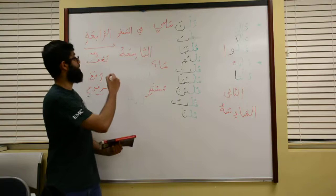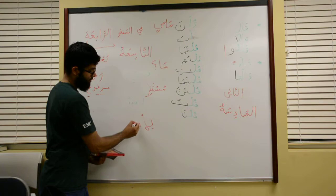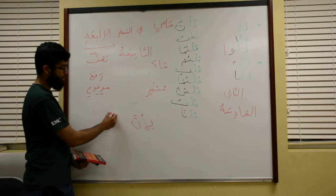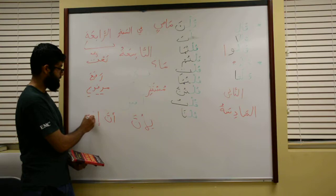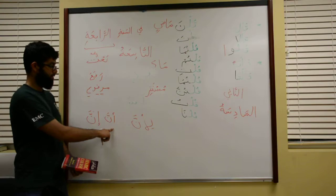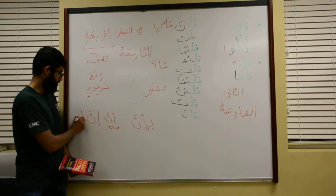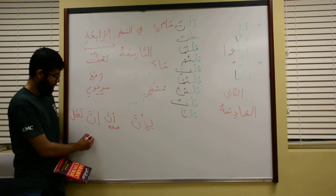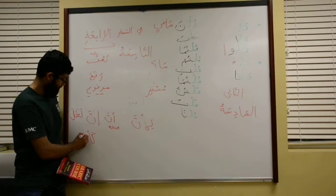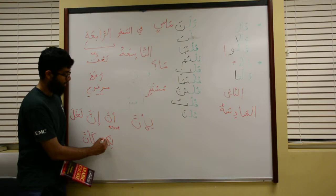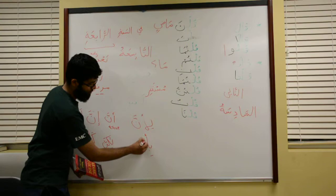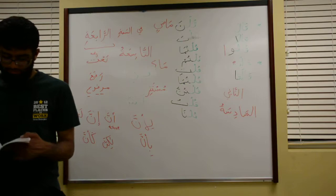Number four: li anna means because. Li anna is a sister of inna. We have inna, which means surely; anna, which means that; la'alla, hopefully; ka'anna, as if; lakinna, but; and li anna and bi anna, both meaning because. The sisters of inna follow the same grammatical rule — their ism must be mansub.